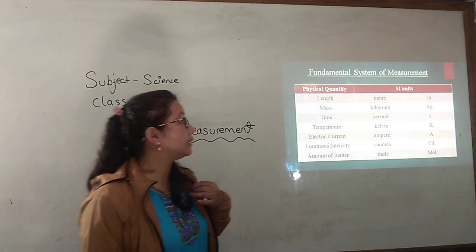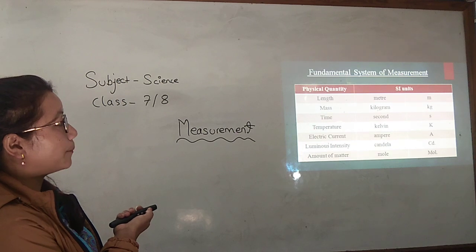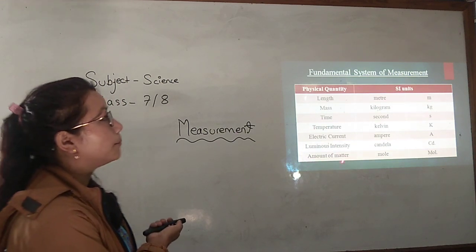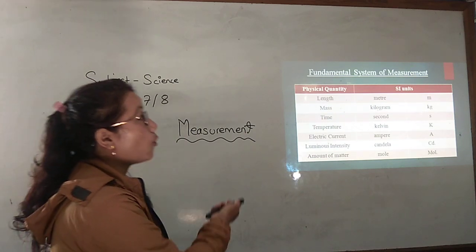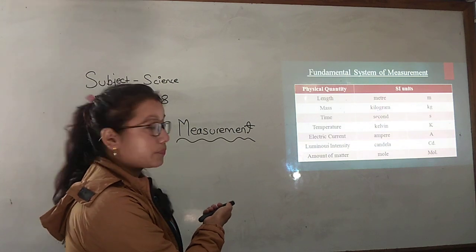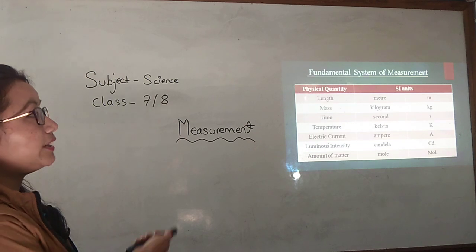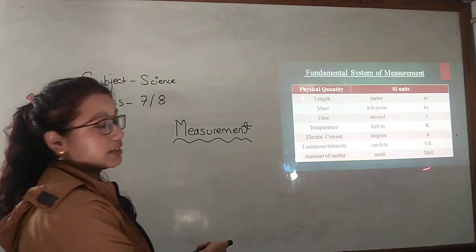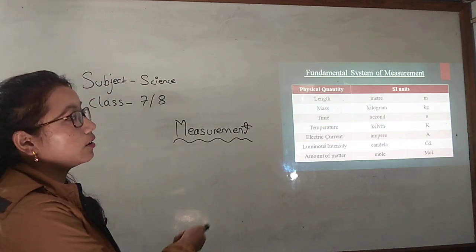There are seven physical quantities: that is length, mass, time, temperature, electric current, luminous intensity, amount of the matter. According to this physical quantity they have their own SI unit: that is meter, kilogram, second, kelvin, ampere, candela, and the mole. It has the physical quantity, has the SI units. These are the symbols that is given for these units.